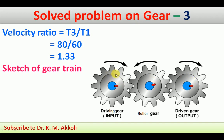The driving gear rotates in the clockwise direction, and the roller gear rotates in the anticlockwise direction. Therefore the output, or driven gear, also rotates in the clockwise direction. To get the same rotation and any speed variations in the gear ratio, we use gear trains.